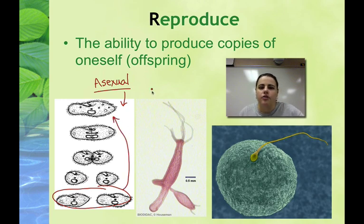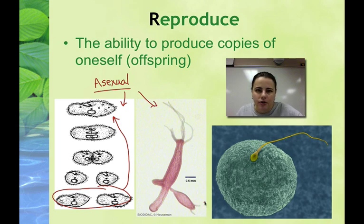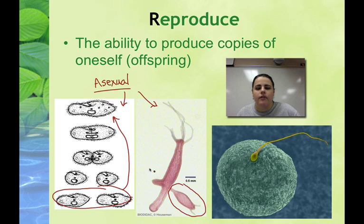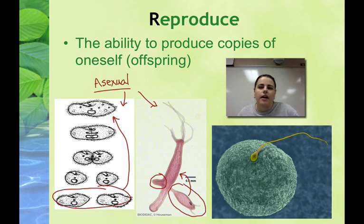Binary fission is splitting into two. This picture is also asexual reproduction — this is an aquatic animal called a hydra. Hydras live in fresh water like ponds, and instead of splitting into two, they grow a miniature version of themselves off the body. That's called budding, and it's a genetically identical offspring of the parent.